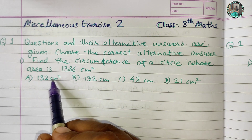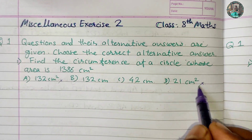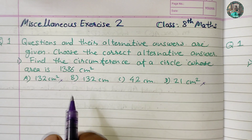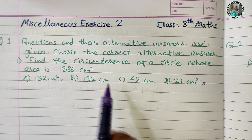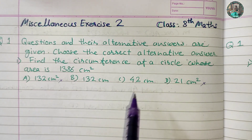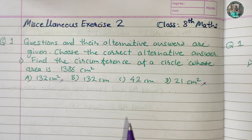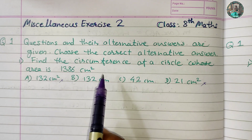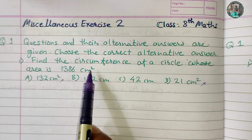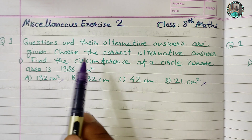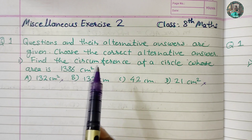Find the circumference of a circle. We have two options: 132 cm and 42 cm.